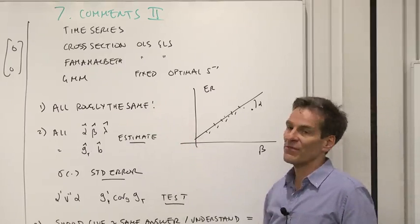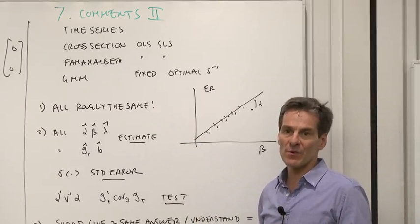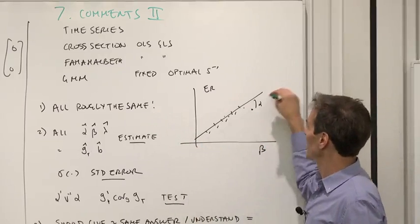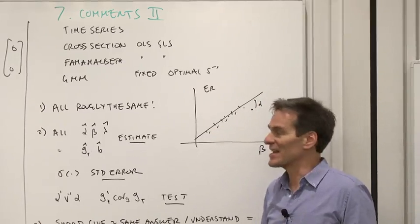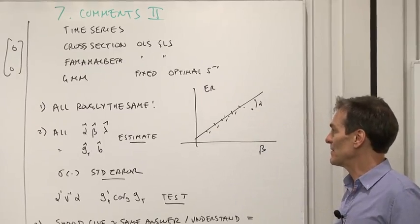But in the end, they're all roughly the same. That was a lot of the point of what we did. They're really all fitting a line through these points, expected returns versus beta, and they should fit about the same line and give about the same alpha.